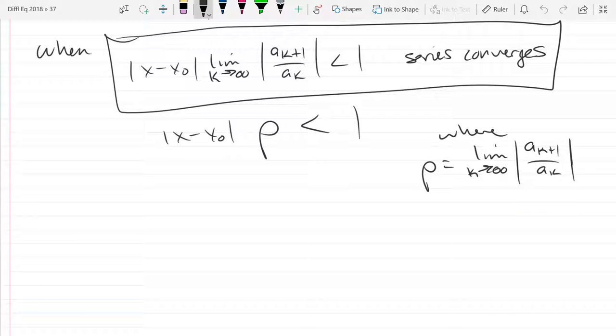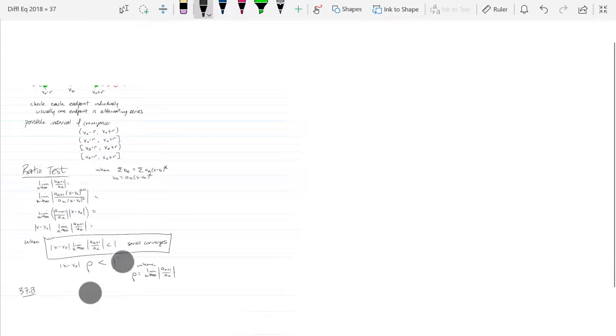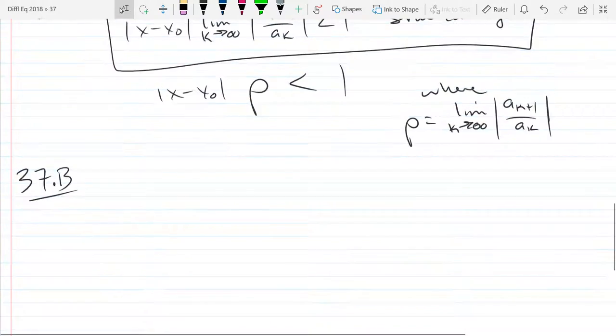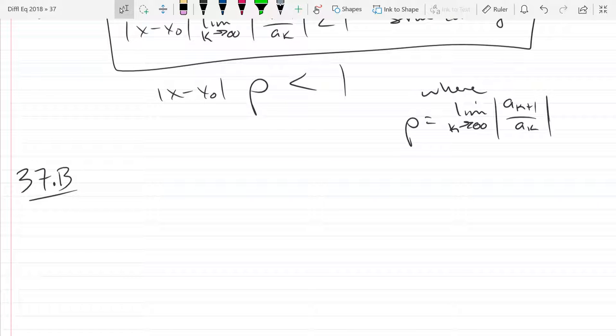So now we're going to talk about solutions by using series. This is 37B. We can keep writing in this section. This is solution to linear ODE by series methods.